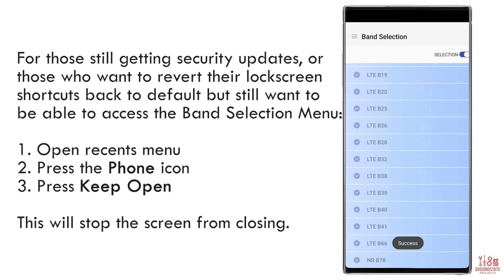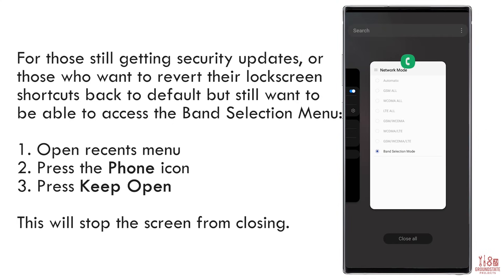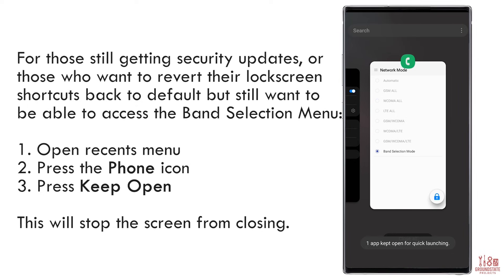After you finish your selection, press the toggle at the top to make the changes. Those who want to revert their lock screen shortcuts back to default but still want to be able to access the band selection menu: open the recents menu, press the phone icon, and then press keep open. This will stop the band selection menu screen from closing after you press close all.